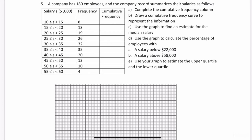In this video, I'm going to show you how to create a cumulative frequency curve from scratch and then use that information from the graph to answer these questions. This is problem number five. A company has 180 employees and the company record summarizes their salaries as follows. On the left hand side in the first column, we have the salary of these 180 employees in the thousands. So when it says between 10 and 15 in the first interval, it really means between $10,000 including $10,000 and $15,000, but it does not include $15,000.